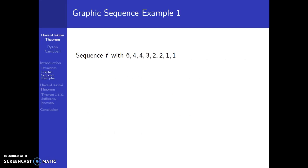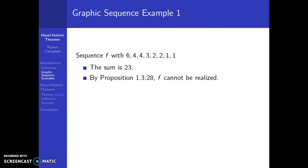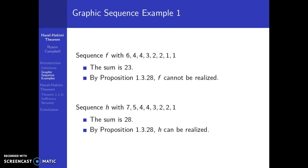Here are some graphic sequence examples. We've got sequence F from our driving question. The sum of those degrees is 23, and since we cannot have an odd sum, by Proposition 1328, F cannot be realized. Sequence H, also from the driving question, has a sum of 28, and by that proposition H can be realized. But the question asks: if we remove the vertex with the largest degree, will we be able to draw a graph? We will answer that after we prove the Havel-Hakimi theorem.